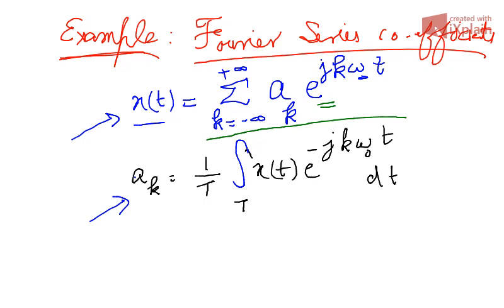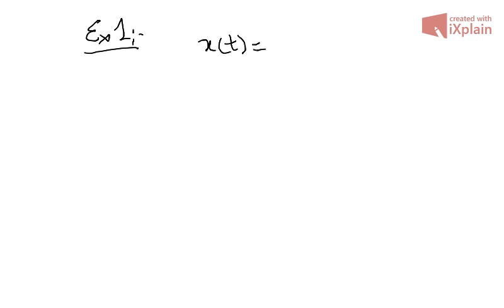Let's see Example 1. In this example we take a simple signal x(t) and try to determine a_k. Suppose x(t) = sin(ω₀t) and we are interested in finding a_k for this signal.